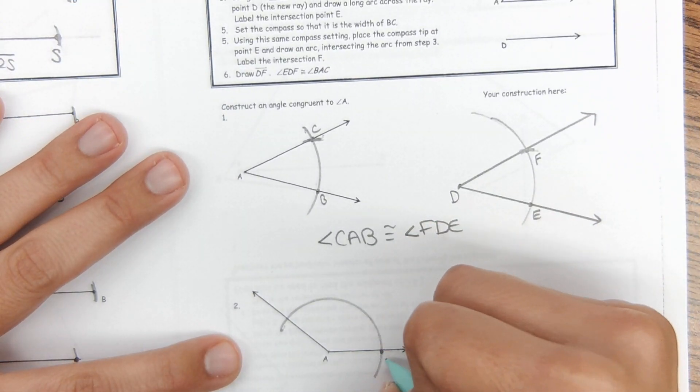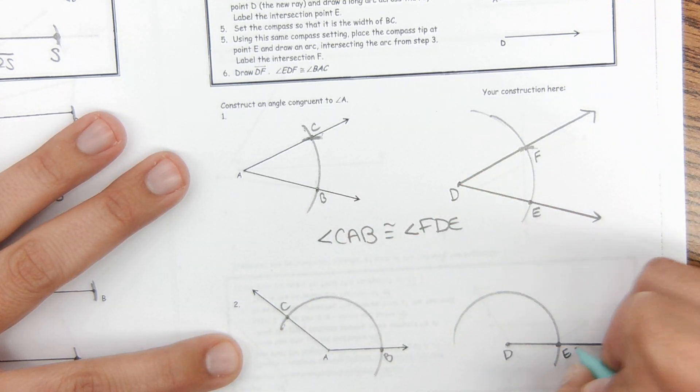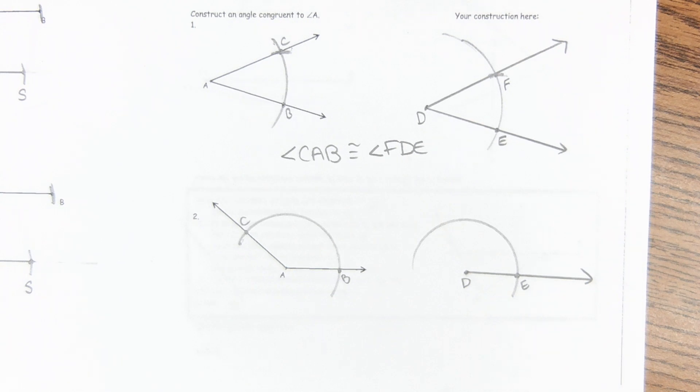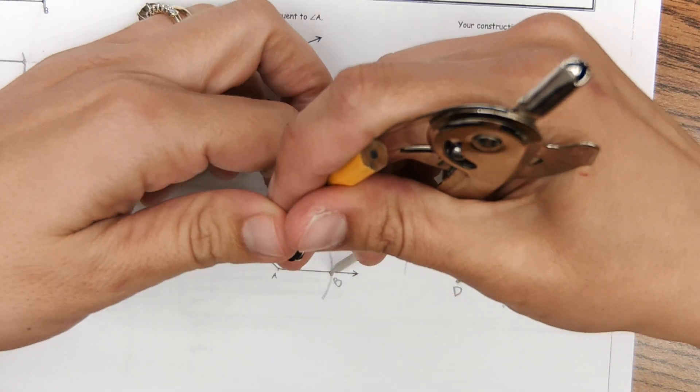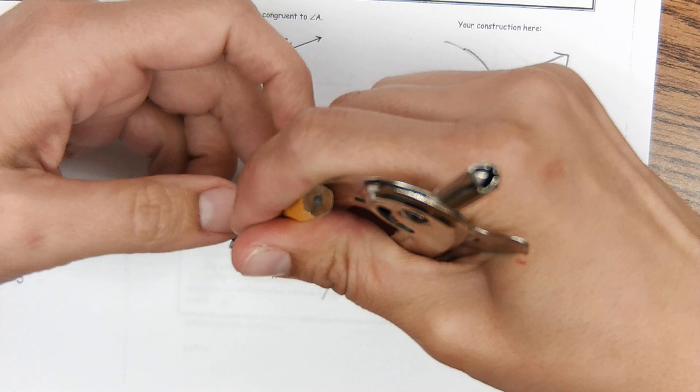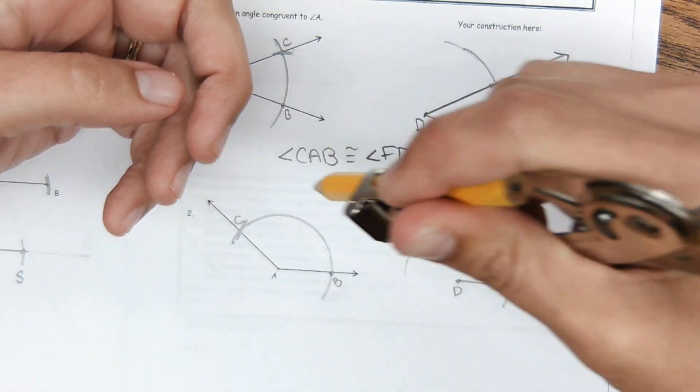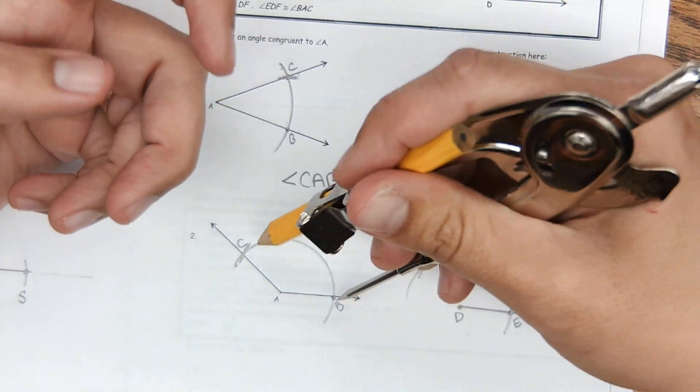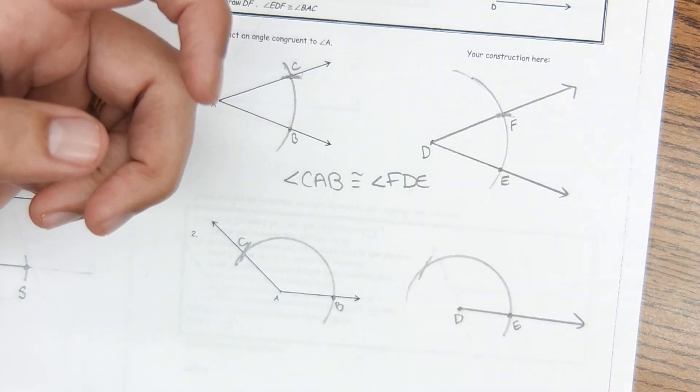Then I'm going to label my points. This is B and C, and this is E. And then I'm going to measure the distance from B to C and make an arc. And then using that measurement put it on E and make the same mark. So I measured the distance between B and C, and then put it on E and made the same mark.